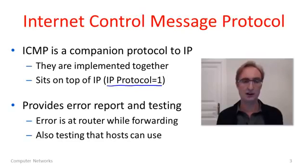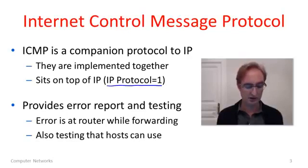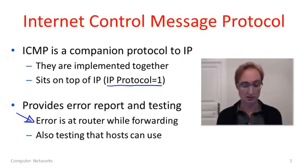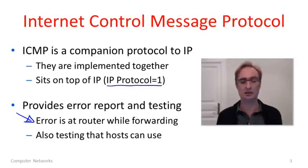ICMP provides a variety of functionality that's useful for understanding connectivity problems. From our point of view, most of this functionality is error reporting — when there's a problem forwarding a packet at a router, that's what I'm calling an error, and that is often reported to whoever sent the packet so they could do something about it. IP also provides a little bit of other functionality, for instance for testing the network without having to have any error occur, but we'll concentrate on errors.